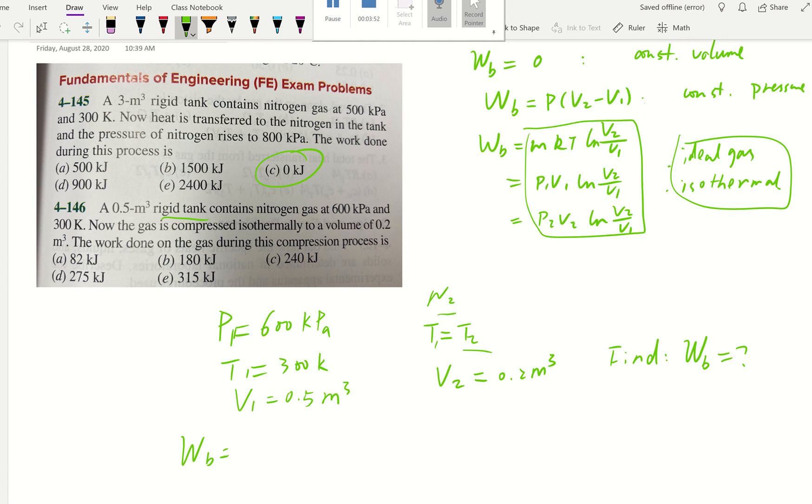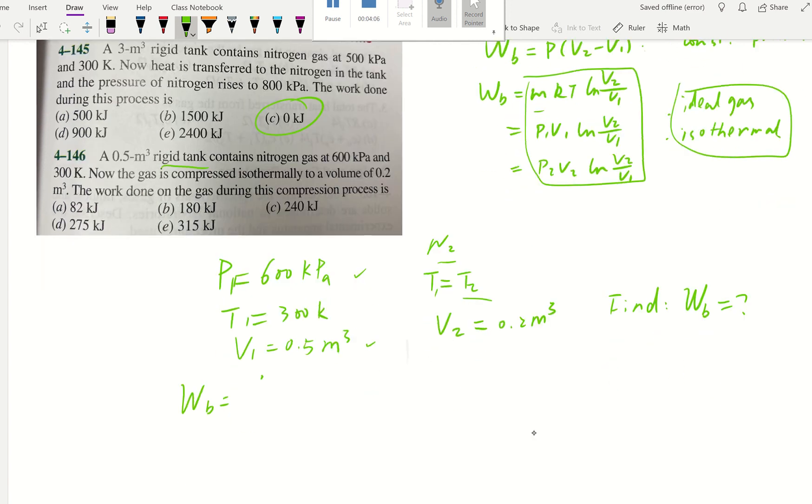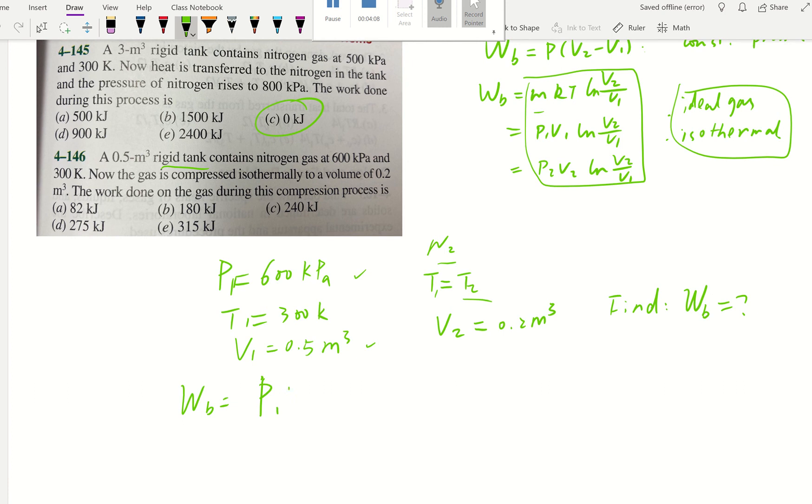Then the boundary work is going to be equal to either one of those three equations. Now let's think about which one is better. They didn't give us mass, so I will eliminate that. And they do give us initial pressure and initial volume. I think that might be a good choice.